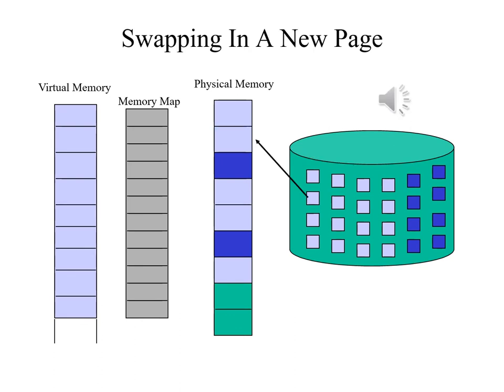Now that the contents of that page are safe, we can read in the contents of the page that we need. This situation is called a page fault, and we have just seen how we handle it in summary form.